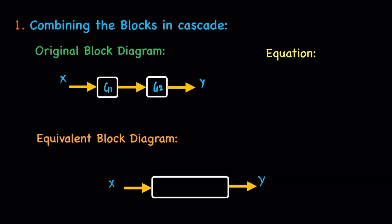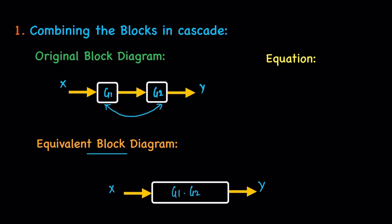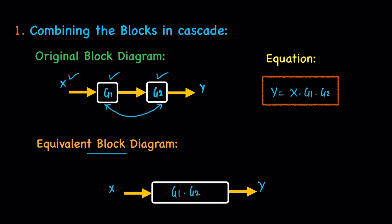Rule one: combining blocks in cascade. The original block diagram is given and we need to find the simplified one. If the block diagrams are connected in cascade, the result is just multiply. So the final result is g1 times g2, and y is equal to x times g1 times g2. In block diagram reduction, the equation plays a major role — the final equation must be the same before and after simplification.